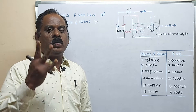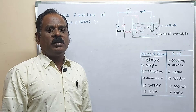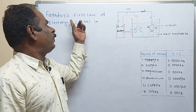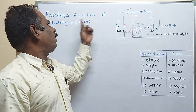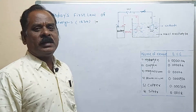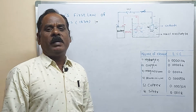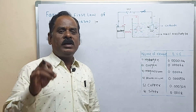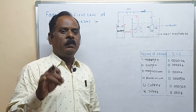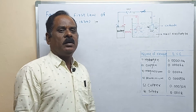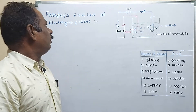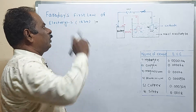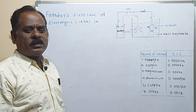He gives two types of relations. The first relation is called Michael Faraday's first law of electrolysis, and the second relation is called Michael Faraday's second law of electrolysis. Today I will teach you the first relation, that is called Michael Faraday's first law of electrolysis.